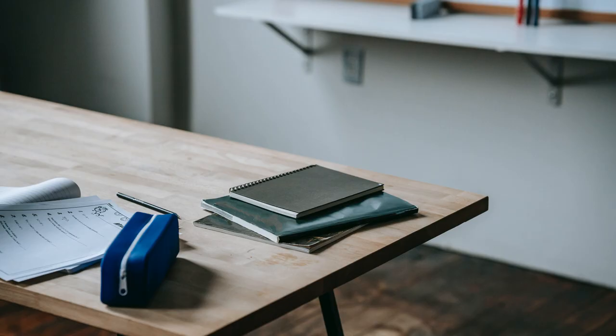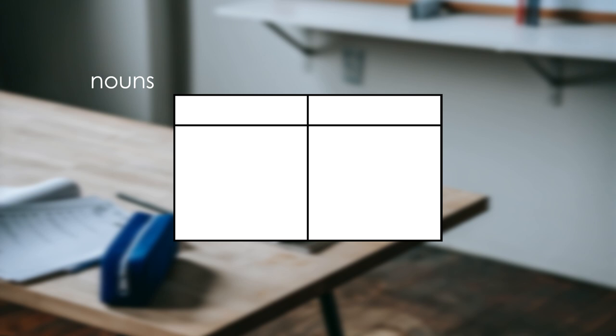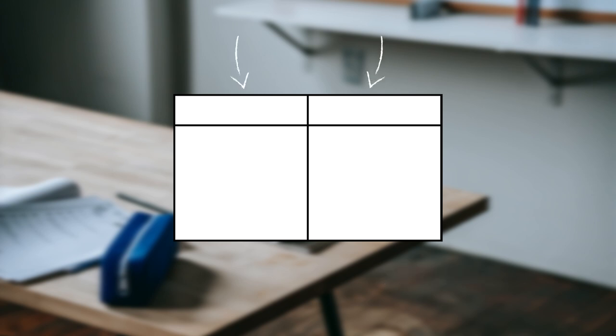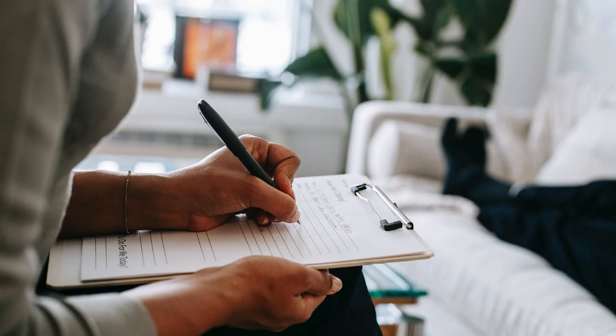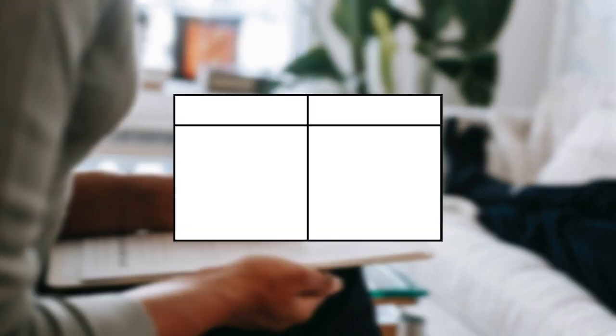Anyway, in almost every lesson I give my students this empty table worksheet. I let them try to classify nouns, verbs, or adjectives into two different things. For example, when we had the lesson about jobs, I asked them to put each job into the correct column depending on whether it's an indoors or an outdoors job.